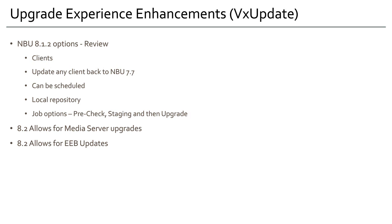Lastly, with 8.2 we're able to push out any emergency engineering binaries. In the event that Veritas identifies a defect or something they can address with a patch, instead of logging into individual systems and applying that patch, we can do it all from the master server and push out an emergency patch directly.